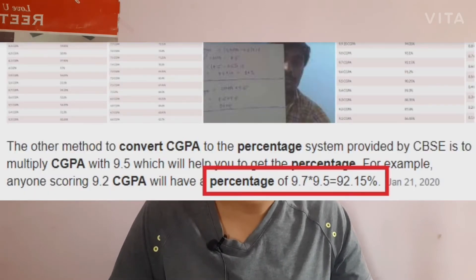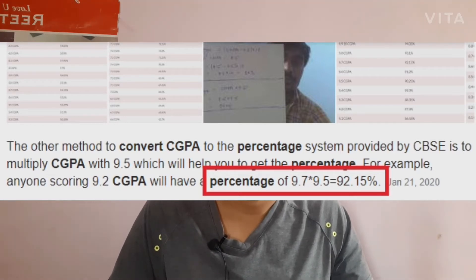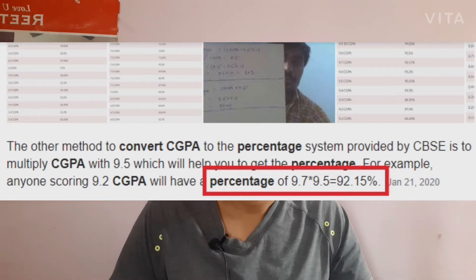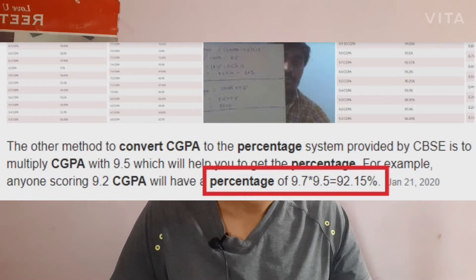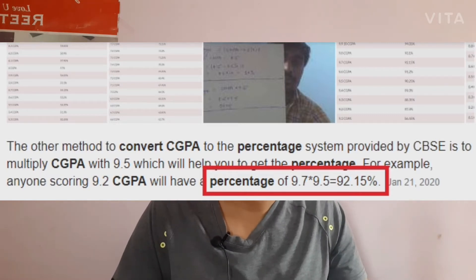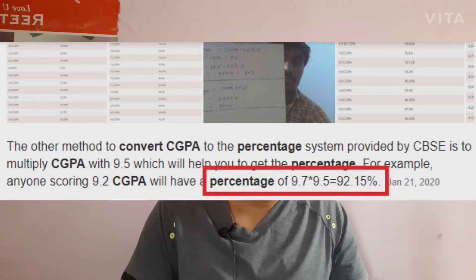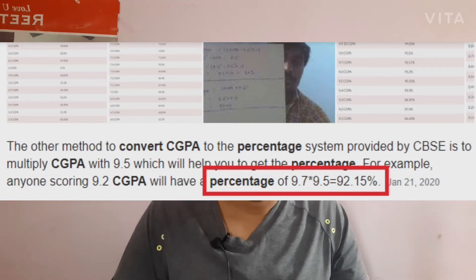For example, suppose you score 8 CGPA and want to convert it into percentage. CBSE simply multiplies your CGPA by 9.5. So if your score is 8, multiply by 9.5 and you get 76 — that is your percentage. Now, talking about IITs, they follow a different rule, and some other universities also follow different rules.